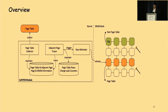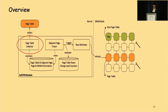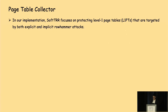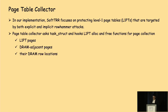Soft TRR works as a loadable module inside the kernel and has three main components. The first is the page table collector. The page table collector actively collects all page tables and maintains their page and DRAM information, and also collects and maintains adjacent pages. Since all existing page table oriented Rowhammer attacks aim at corrupting level 1 page tables, we focus on protecting level 1 page tables (L1 PTs). For existing L1 PT pages, the page table collector enumerates the list of task structures in the kernel to collect L1 PT pages.